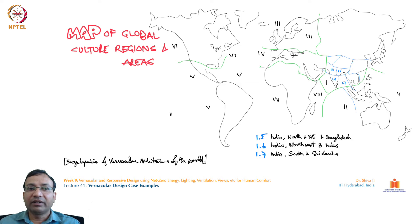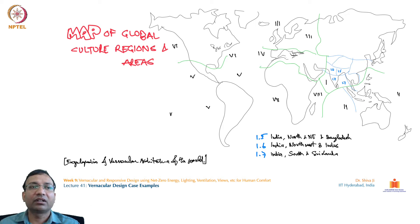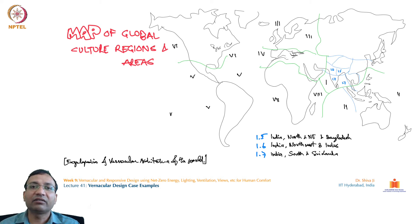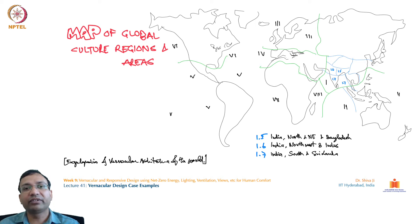A map from the Encyclopedia of Vernacular Architecture of the World divides the world's regions by similar vernacular architectural systems. The Indian subcontinent falls under classifications 1.5, 1.6, and 1.7, representing subtropical warm-humid areas, arid areas, and forest-subtropical areas. India is broadly divided into three vernacular zones. This encyclopedia provides beautiful examples of architectural systems from the many vernacular divisions of the world.